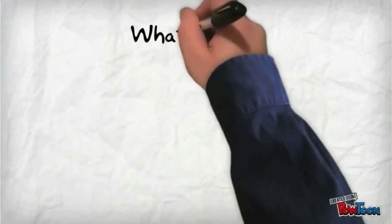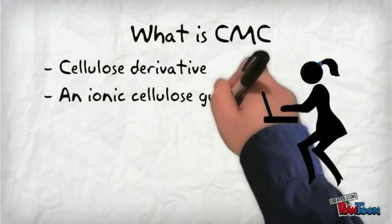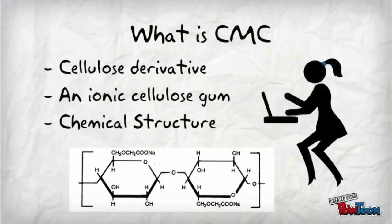CMC is a cellulose derivative obtained from plant fiber by means of chemical modification. Owing to its unique thickening, suspending, adhesion, and water retention properties, it is widely used in various industrial fields.